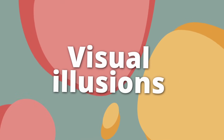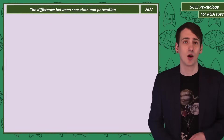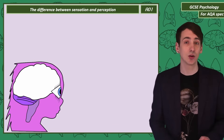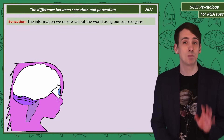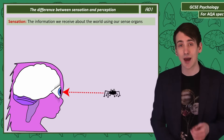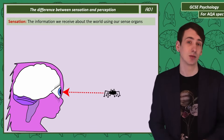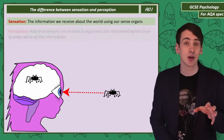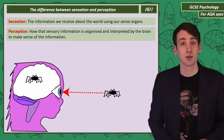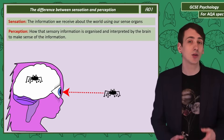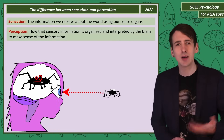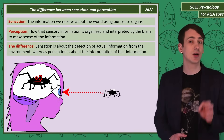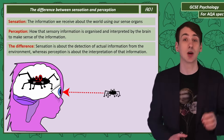Visual Illusions. Let's clarify two definitions. We need to understand the difference between sensation and perception. We have sense organs and they detect information about the world outside of our brain. The detection of that information is sensation. But that information, after detection, is then processed by the brain — it's organised and interpreted to make sense of what we've detected. That is perception. Sensation is about the detection of actual information; perception is about interpretation.